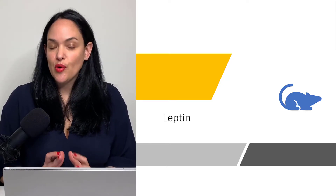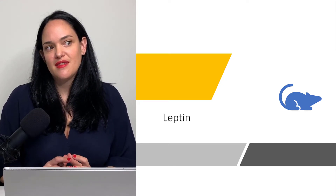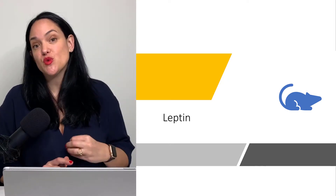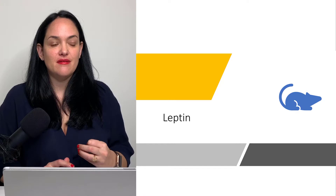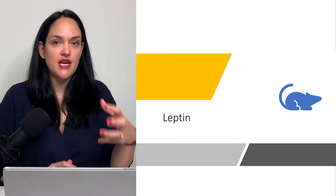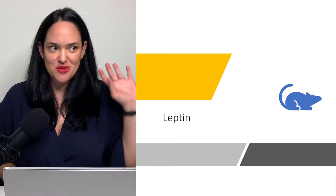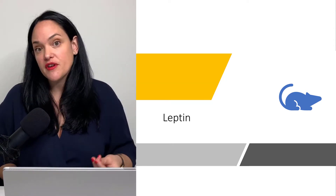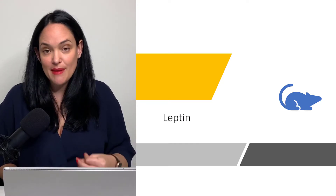Leptin is arguably the most important adipokine. It's also the adipokine that really changed the game, because it was the first one discovered, and the discovery of leptin changed our view altogether of what adipose tissue is. We used to think it just sat there and stored fat, but the discovery of leptin showed us that adipose tissue is a dynamic tissue.